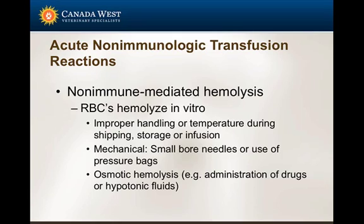An example of non-immune-mediated hemolysis involves how we handle the blood products. We can actually damage red cells by massaging or squeezing the unit — not a good idea. Proper temperature during shipping, collection, or storage is very important, as extreme temperatures can damage red cells. It's important to use the largest catheter or needle possible, because small-bore catheters or needles can also damage red cells. We can also see osmotic hemolysis if we incorrectly administer hypotonic fluids, causing lysis of the red blood cells.